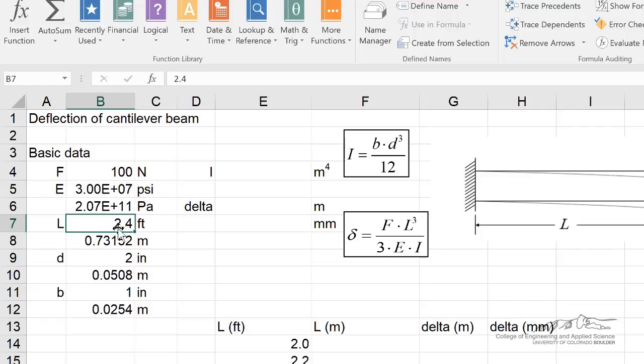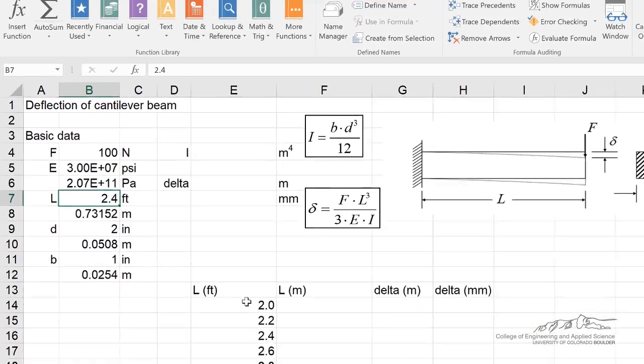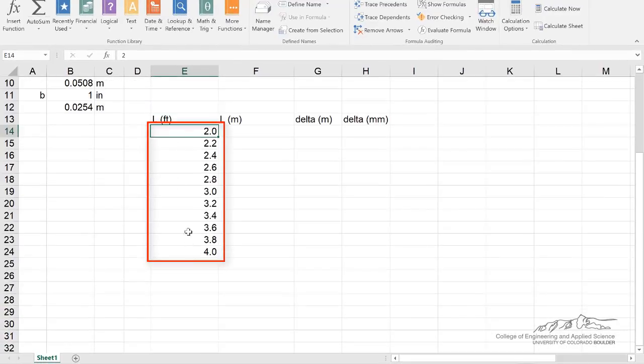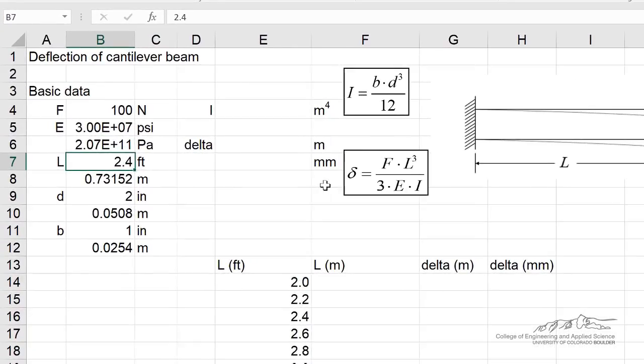So I've got my length in feet. And right now I just kind of have a single variable. We're going to be doing a case study on length down here going from 2 to 4. So I've just chosen just a random value here between 2 and 4. That's 2.4 feet. I've converted that to meters using a conversion factor. I've also got my value of D which is 2 inches and B which is 1 inch. And each of those I've converted to meters.